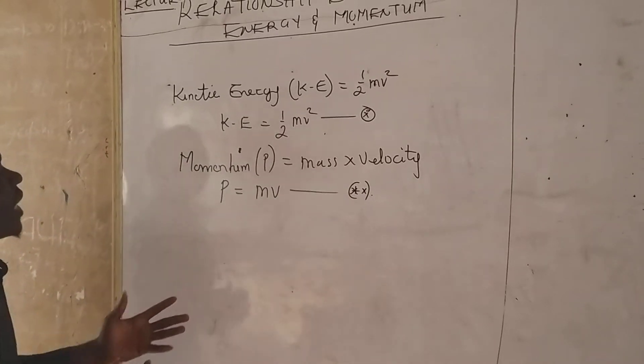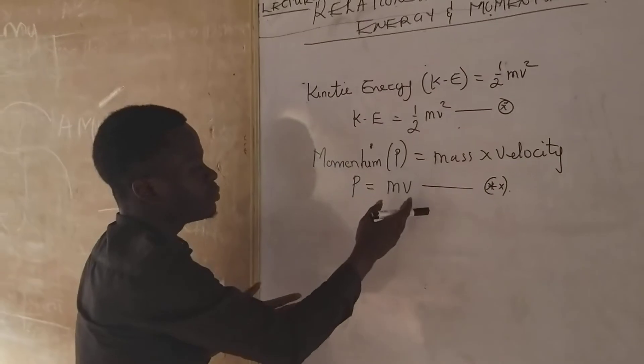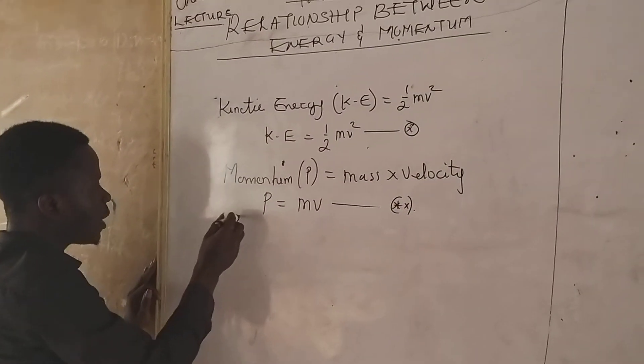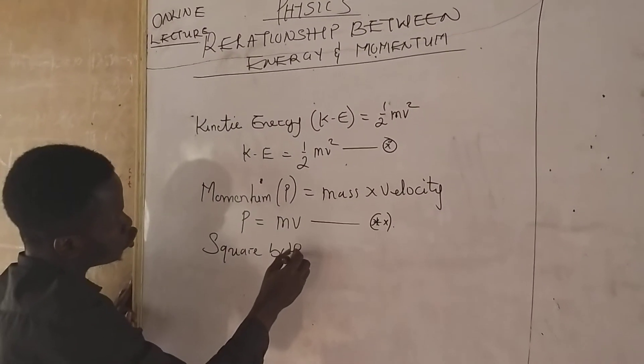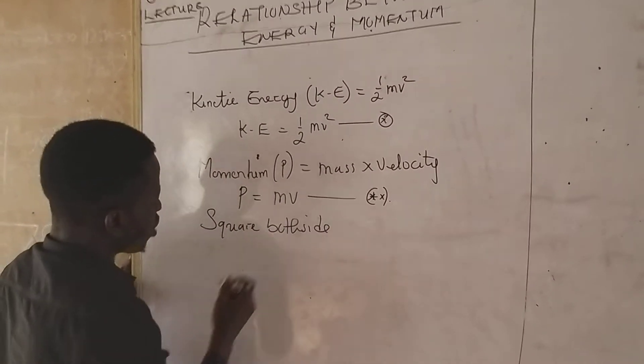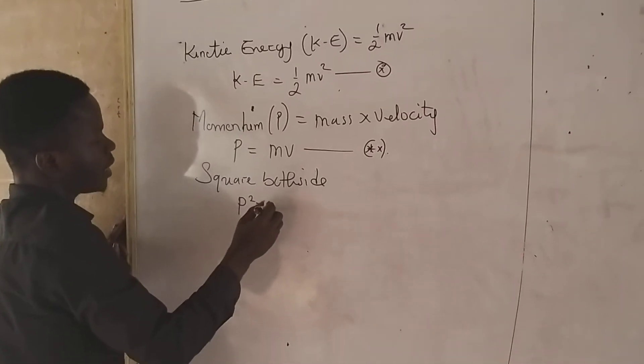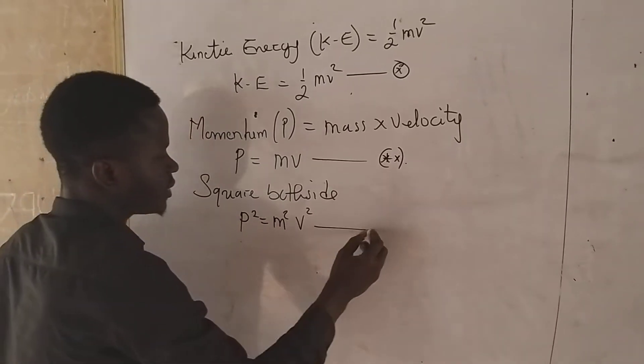Now from this equation, we are able to derive the relationship between the energy and momentum. How do we do this? We square both sides of the momentum. When we square both sides, we are having P squared, M squared, V squared for momentum. Let's call this equation 3.